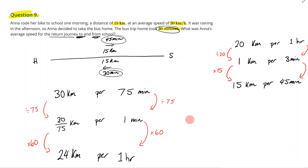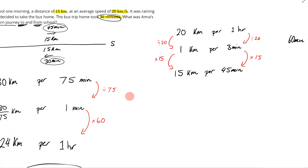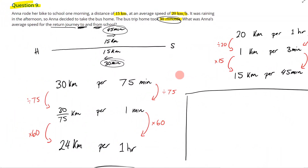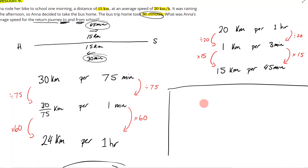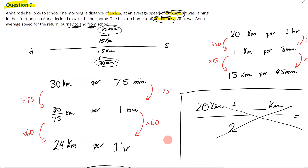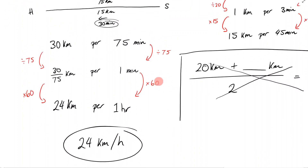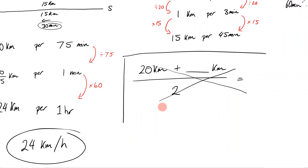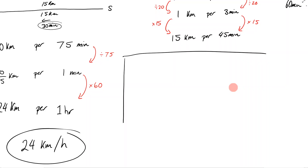This is a detour, but I want to talk about a common mistake with this question. Some people might say: if her speed to school was 20 kilometers per hour, and I find the speed she went home on the bus, can't I just add them together and divide by two to get the average speed? The answer is no — you cannot do that. I'll link a video in the description that explains this in more detail. You have to go through the full process — you can't just add the average speeds and divide.